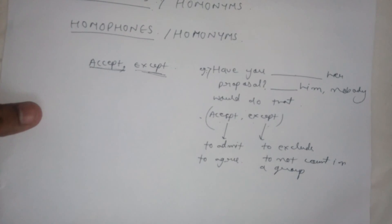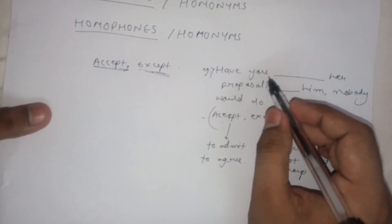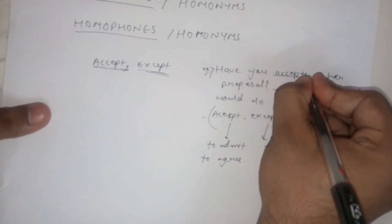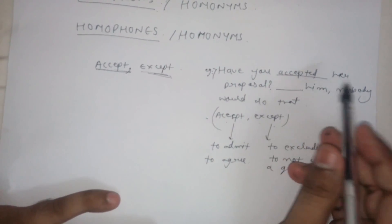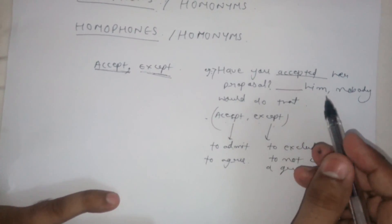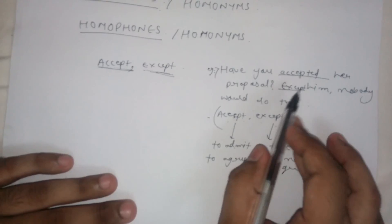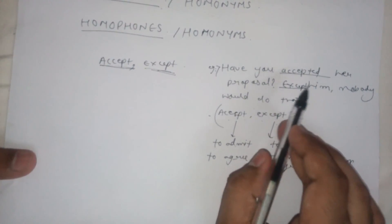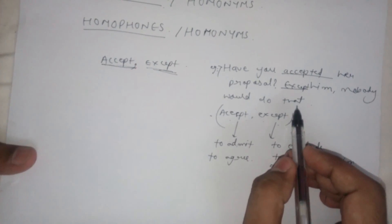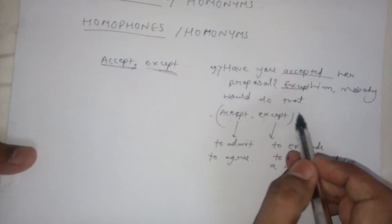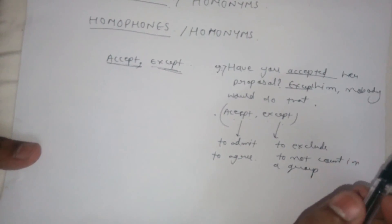So here, 'Have you accepted her proposal?' uses 'accepted' — meaning did you agree to her proposal. 'His friends said to except him; nobody would do that' — meaning to exclude him from the group. His friends indicated that nobody would accept the proposal except him. This is how you fill the blanks correctly.